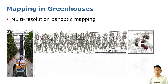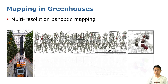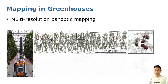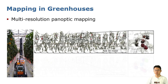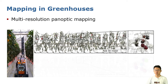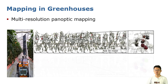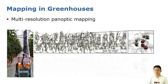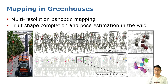In this paper, we address the problem of building a 3D multi-resolution panoptic map using a mobile robot with RGB-D sensors. Furthermore, we jointly estimate the complete 3D shape and pose of each fruit in the map.